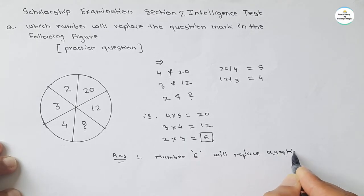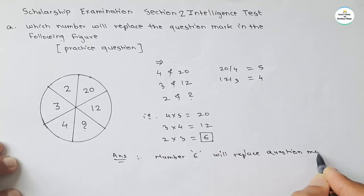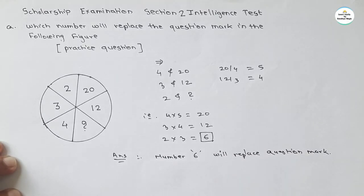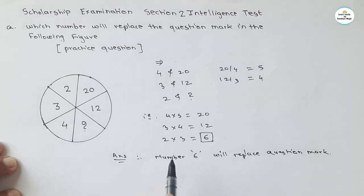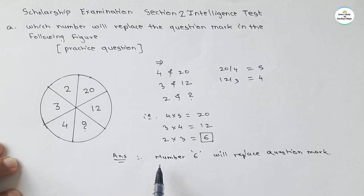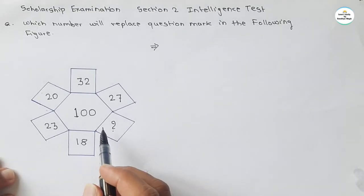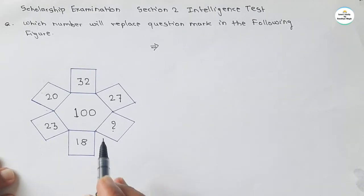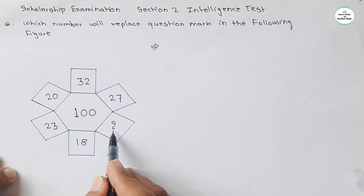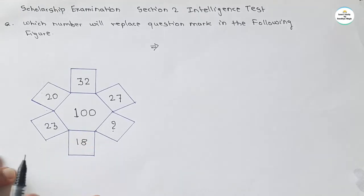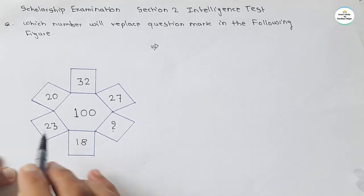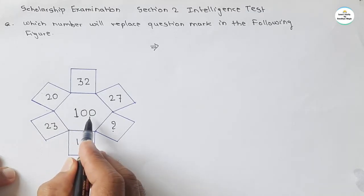It's very easy — we just have to find the relation. With more practice we get the idea very clearly and can solve such questions quickly. Now let's see today's original question. We again have to find a relation between opposite numbers with respect to the central number 100.